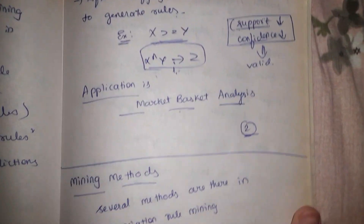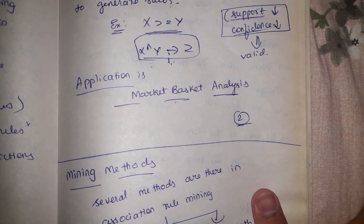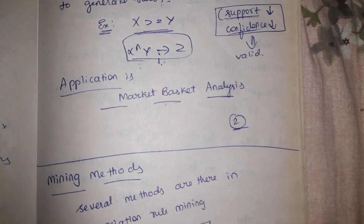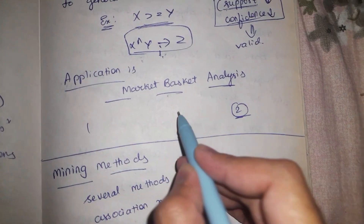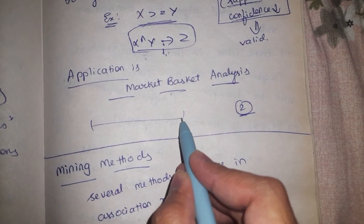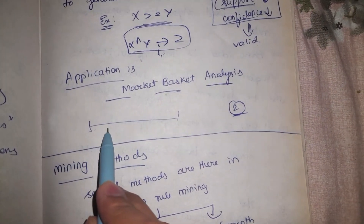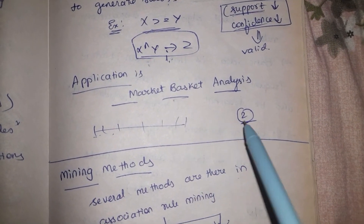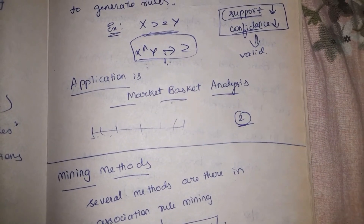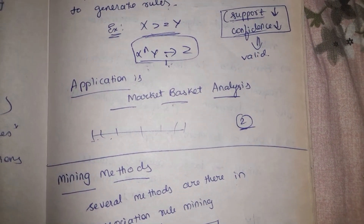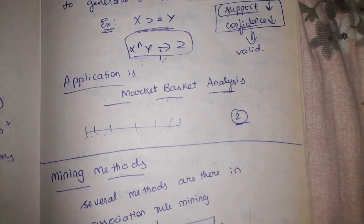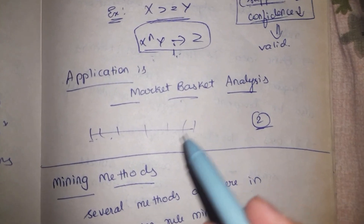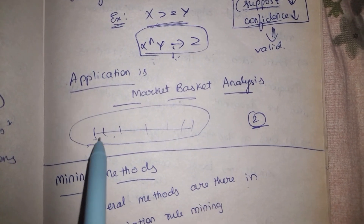A common application of association rule or frequent pattern mining is market basket analysis. Market basket analysis concerns analyzing the customer purchase pattern. Over a given time interval, we try to understand how many items a particular customer has purchased, so that we can predict what the customer can purchase in the future and show those items in their feed accordingly.